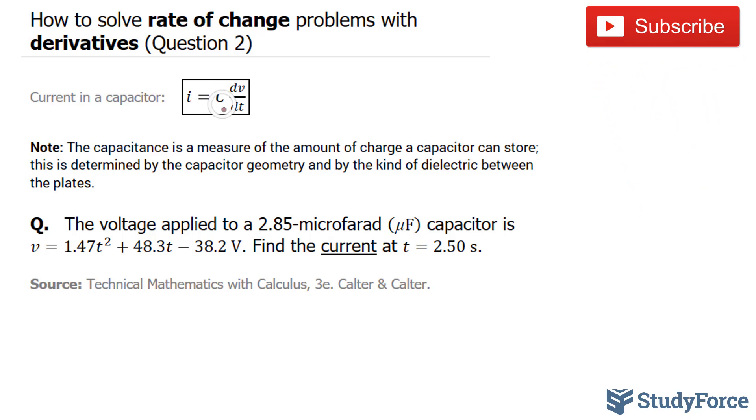What we have to do is find the derivative, then substitute 2.50 into that derivative and multiply by the capacitance, which is 2.85 times 10 to the power of negative 6, because this is microfarads. Let's go ahead and do that.